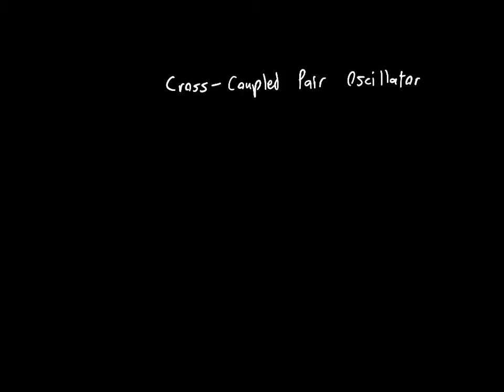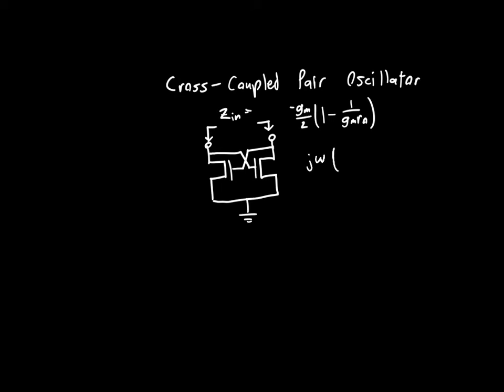We showed that the cross-coupled pair has a negative real input impedance or input admittance. If you connect it, you'd get an impedance Zn that's equal to minus gm over 2 times 1 minus 1 over gm ro. That's the real part. And then you'd get an imaginary part, which is equal to j omega times cgs plus cdb plus 4cgd, and there's a one-half out front as well.